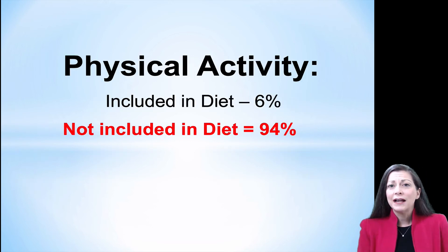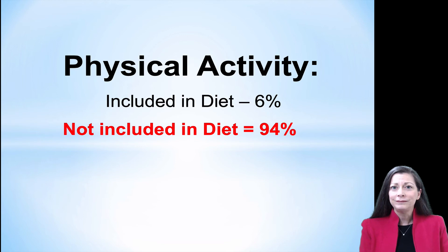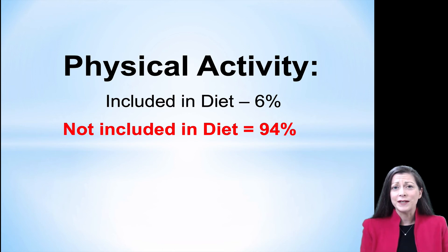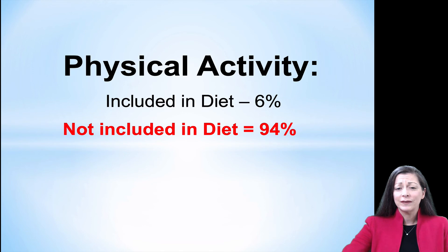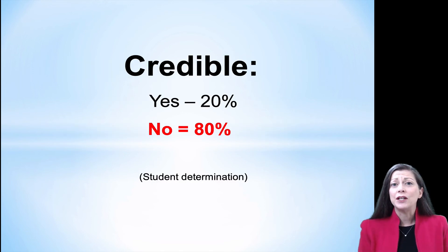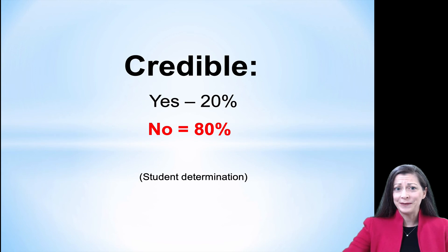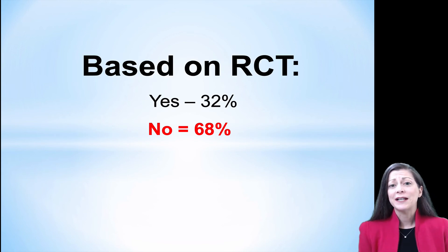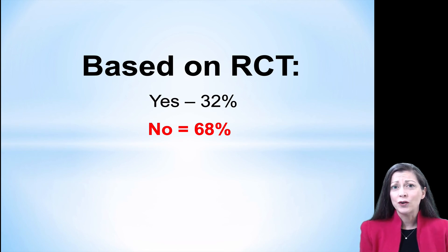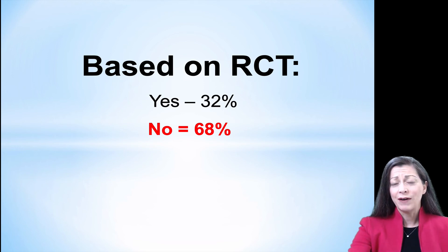Physical activity was not included in 94% of the diets this class reviewed, even though physical activity is one of the elements of weight management that we have the most control over. Were the diets credible? Based on student opinion, 80% said the diets they reviewed were not credible. Were the diets based on randomized controlled trials? 68% were not — meaning there is no science backing up these dietary recommendations.